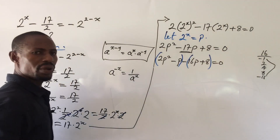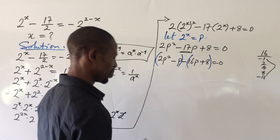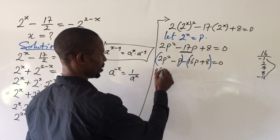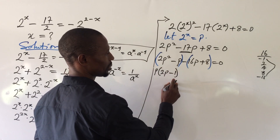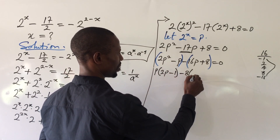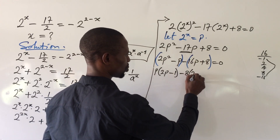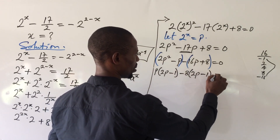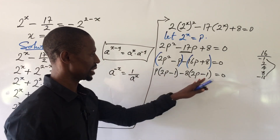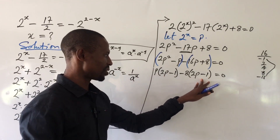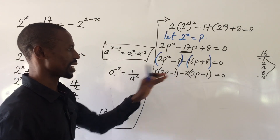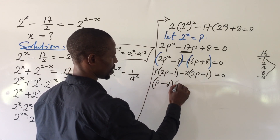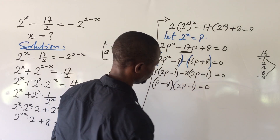We group the terms into two pairs: (2p² minus p) and (minus 16p plus 8). From the first bracket, p is common, leaving (2p minus 1). From the second bracket, minus 8 is common, giving minus 8 times (2p minus 1). Since both brackets share the factor (2p minus 1), we factor it out to get: (p minus 8)(2p minus 1) equals 0.